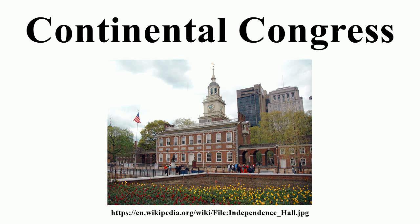The Continental Congress took on powers normally held by the British monarch and his council, such as the conduct of foreign and military affairs. However, the right to tax and regulate trade was reserved for the states, not the Congress. They had no formal way to enforce their motions on the state governments; delegates did not report directly to the president, but to their home state assemblies. Its organizational structure has been described as an extreme form of matrix management.